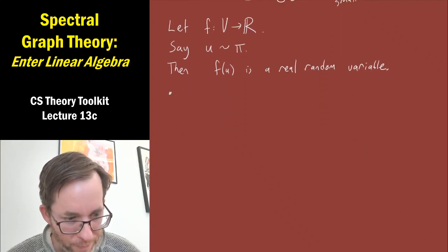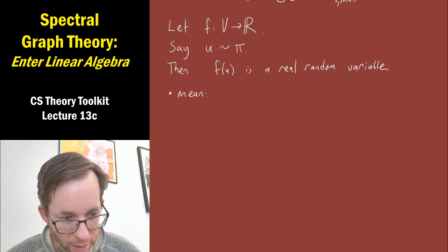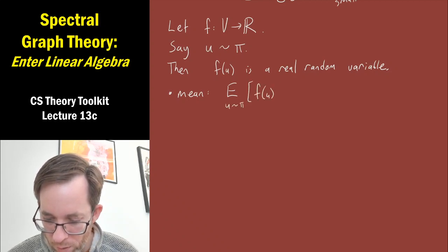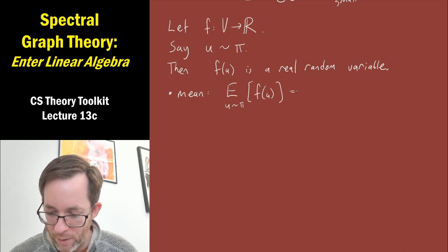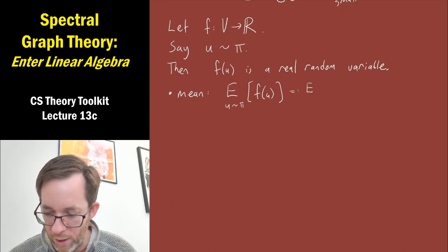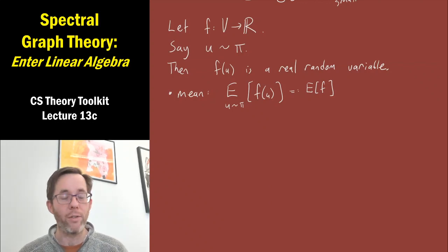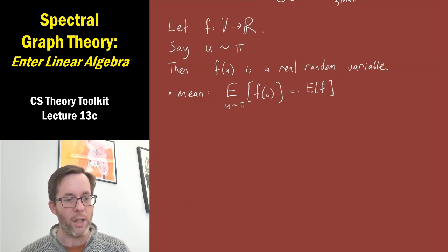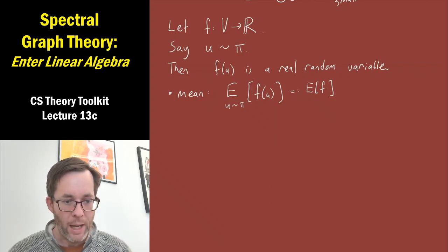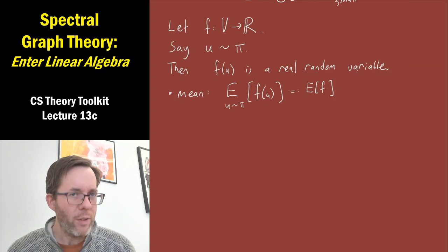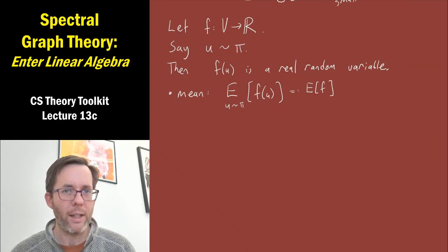The mean of this random variable, which we'll write as the expectation over u drawn from pi of f of u — or sometimes for shorthand, just the expectation of f — means the average value of f, not according to the uniform distribution in general, but according to the stationary distribution pi.